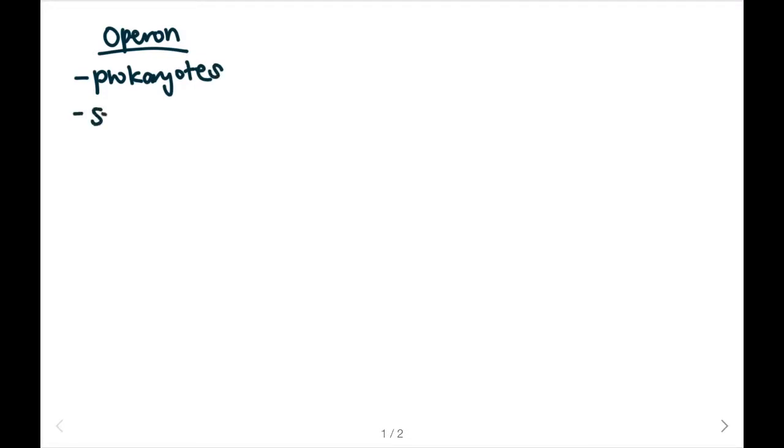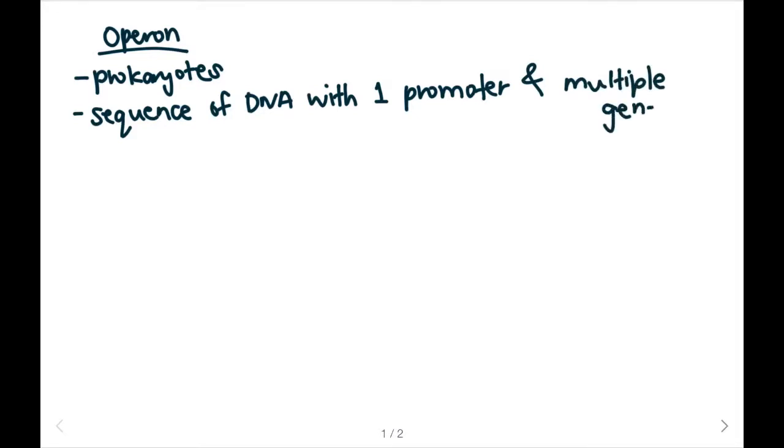It's defined as a sequence of DNA with one promoter and multiple genes. If we draw this out, this can be my DNA sequence, and I'll have my promoter next to several genes.